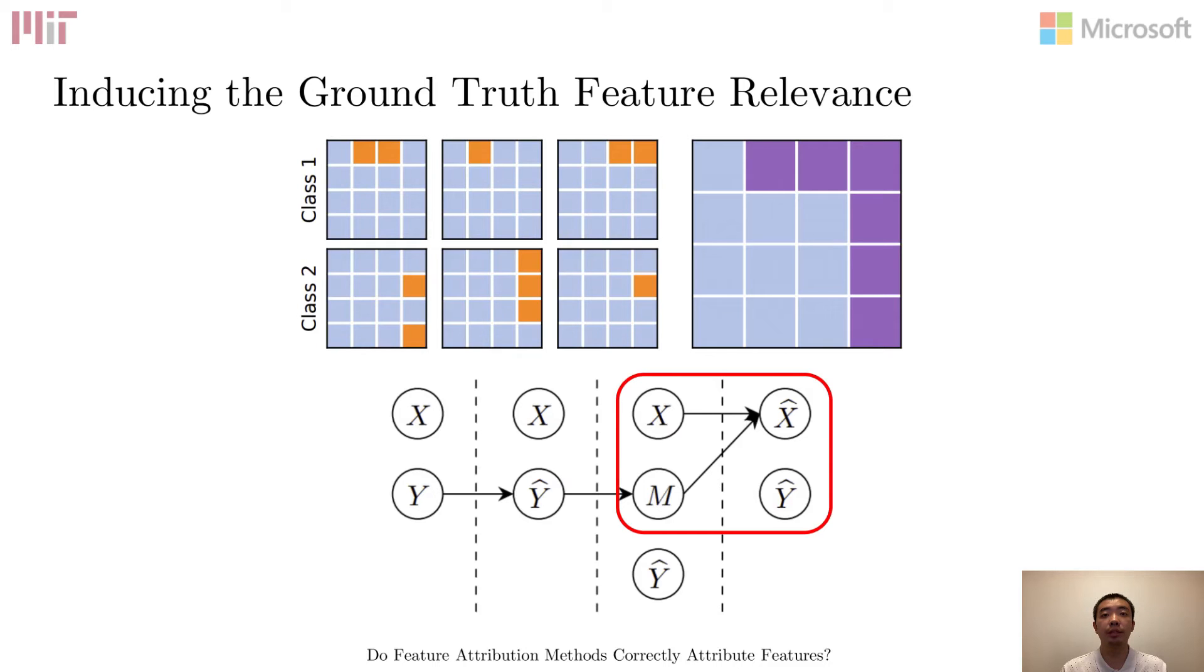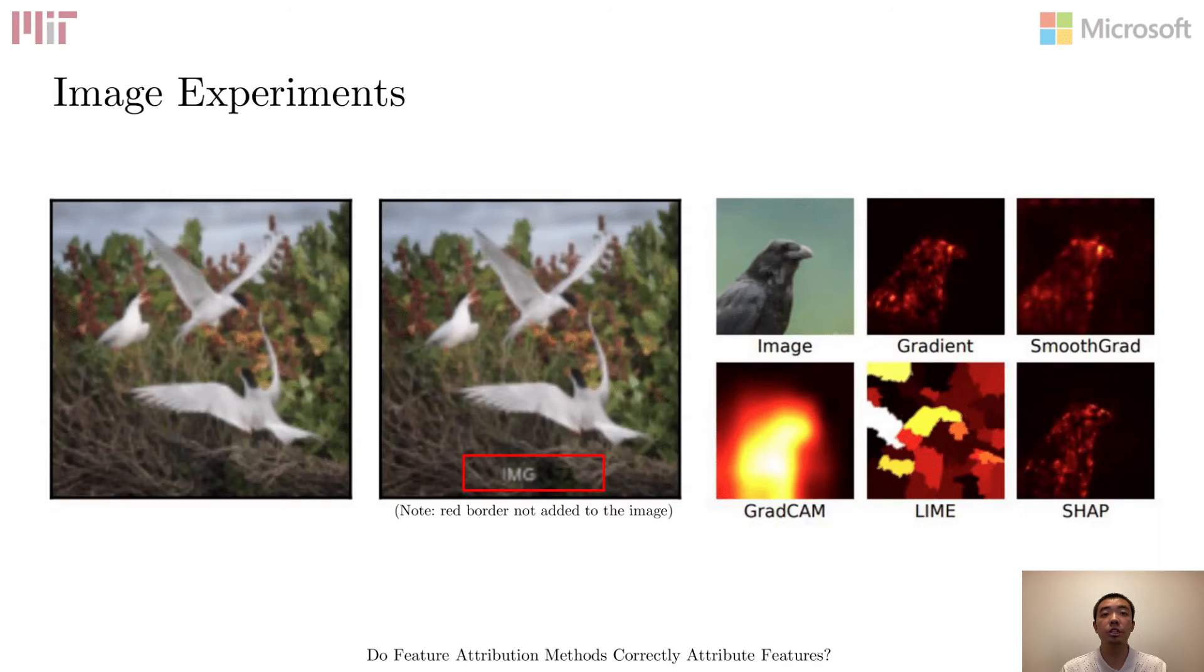Now that we have worked out the dataset modification procedure and set up the expectations for good explanations, let's evaluate some common image and text models. For the image domain, we collected a BERT dataset and injected various features such as the watermark shown here in the red box. We evaluated several saliency maps, which all seem reasonable when explaining the original images. We randomly shuffle the labels in the label reassignment step so that only the injected features are useful for the prediction. In addition, the models we trained easily achieve near-perfect accuracy, suggesting that the contribution of outside features is minimal.